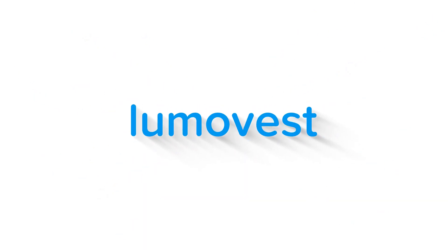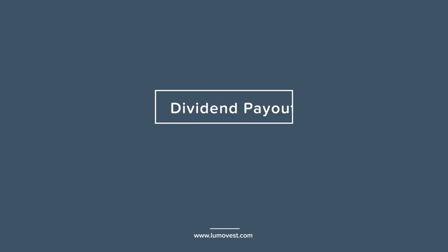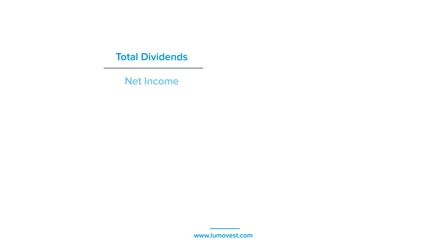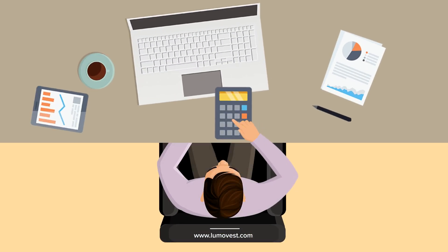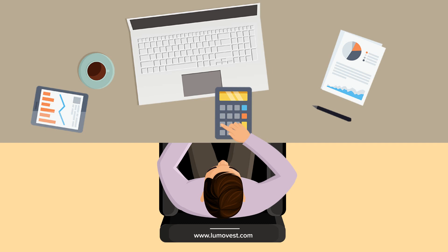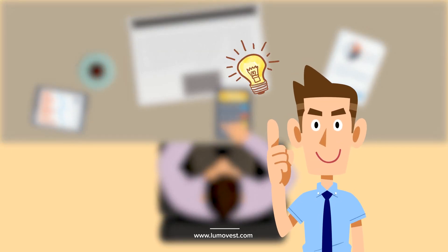Hey guys, welcome to Lumovest. In this video, we're going to dive deep into the calculations of the dividend payout ratio. We learned in the earlier video that the dividend payout ratio is calculated by dividing total dividends by net income, or dividend per share by earnings per share. The formula is pretty easy, but just like the calculations for dividend yield, the trick is using the right numbers in order for the analysis to be meaningful. In this video, we'll go over some quick points that'll help you calculate the right metric.